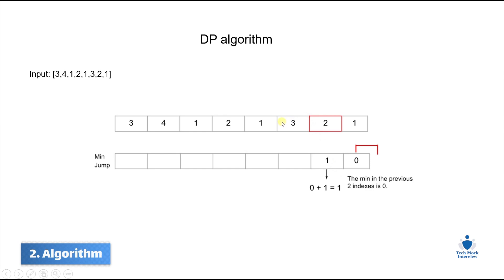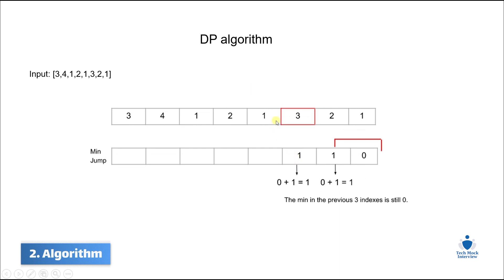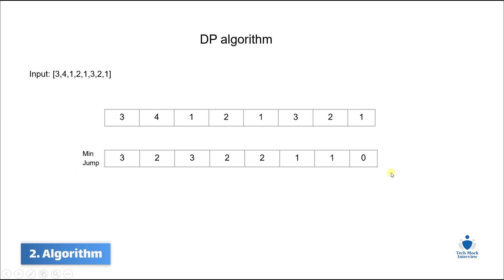Moving to the next index, we consider the last three indexes in the min_jump array and find the minimum, which is still zero, then increment by one and fill it in. Continuing this process — for example, when we only have to consider one previous index with value one, we increment it by one to get two. We fill the entire table with the same method to get our final result. After filling this array, in the dynamic approach we go back to the beginning of the original array to find the minimum number of jumps.